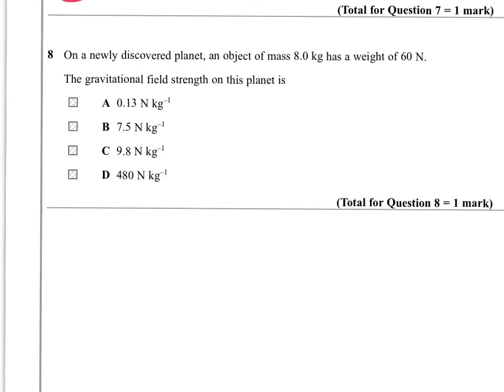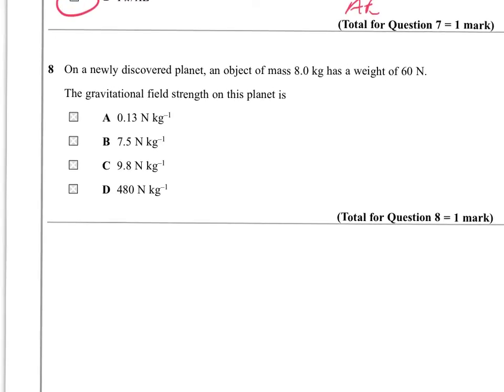On a newly discovered planet, an object of mass 8 kilograms has a weight of 60 newtons. Gravitational field strength is going to be one of these values in newtons per kilogram. Well, to get newtons per kilogram, we need to divide the newtons by the kilograms here. So we've got 60 newtons over 8 kilograms. That's going to give 60 over 8 newtons over kilograms. And that's going to be 7.5 newtons per kilogram. Answer B.